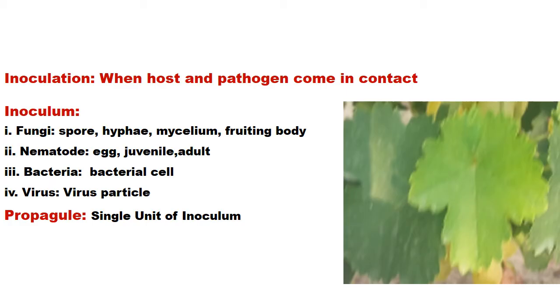In the case of nematodes, the inoculum is the egg, juvenile, or the adult. In the case of bacteria it is the whole bacterial cell, while in the case of virus it is the whole virus particle. The inoculum of fungi — a spore, hyphae, mycelium, or fruiting body — gives them great diversity. The individual unit of the inoculum is called a propagule.